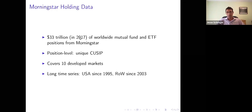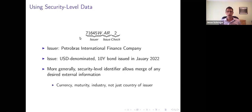What's particularly important for us — and I think really relevant as you think about your own research going forward — is the power you have when you begin with a security-level dataset for questions in international macro. Most datasets on portfolio investment in stocks and bonds are going to have a security-level identifier. From this individual position, you can recover macro variables like the country where a security is issued, as you would in the home bias literature.